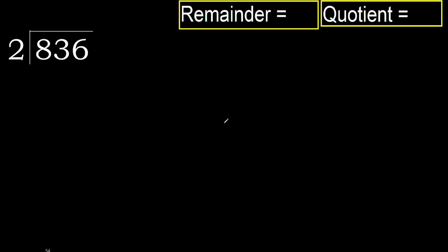836 divided by 2. 8 is not less, therefore start with 8. 2 multiplied by which number is nearest to 8 but not greater? 2 multiplied by 5 is 10 — 10 is greater. Multiplied by 4 is 8. It is not greater.